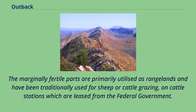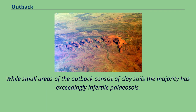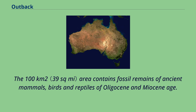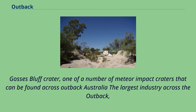The marginally fertile parts are primarily utilized as rangelands and have been traditionally used for sheep or cattle grazing on cattle stations which are leased from the federal government. While small areas of the outback consist of clay soils, the majority has exceedingly infertile paleosols. Riversleigh, in Queensland, is one of Australia's most renowned fossil sites, and was recorded as a World Heritage Site in 1994. The 100 square kilometre area contains fossil remains of ancient mammals, birds and reptiles of Oligocene and Miocene age.